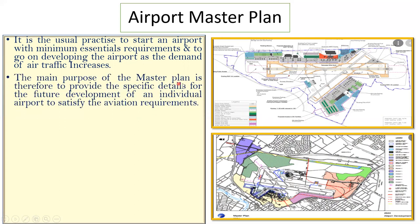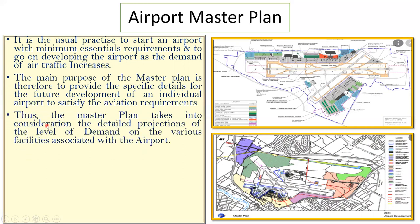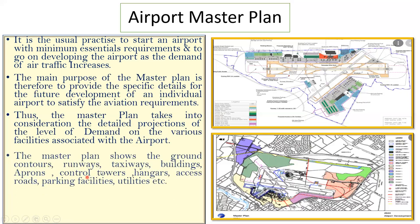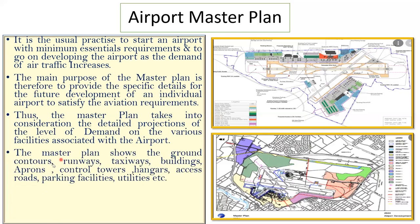The main purpose of a master plan is to provide specific details for the future development of an individual airport to satisfy aviation requirements. The master plan takes into consideration the detailed projections of the level of demand on the various facilities associated with the airport. The master plan shows ground contours, runways, taxiways, buildings, appearance, control towers, hangars, access roads, parking facilities, utilities, and so on.